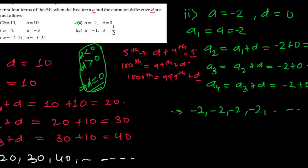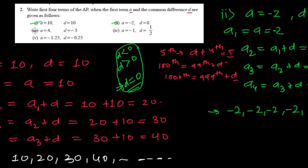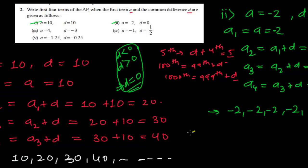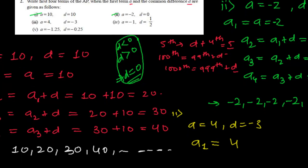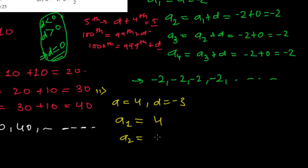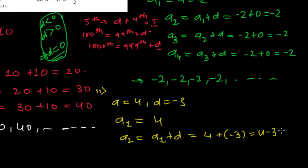Now let me do the third problem with a different color. In the third problem, the first term is four, and the common difference is negative three. So I am writing the first term, that is always the given first term, that is four. And now the second term — A2 is always the first term plus the common difference. The first term is four and the common difference is negative three. So four minus three, that is one.